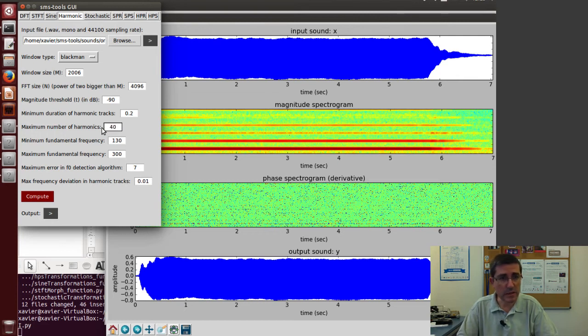We know the fundamental frequency is 264, so the range has to be for that—130 to 300, and 264 is within that. Maybe we can make this higher to make sure it fits correctly. The error for fundamental frequency detection should be fine—it's a very clear fundamental. This deviation is how we'll allow the harmonics to deviate from perfect harmonicity. Let's compute it again.